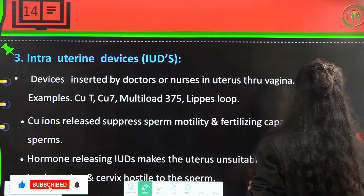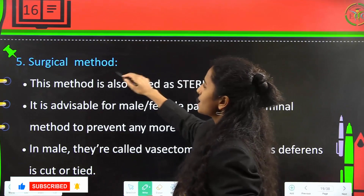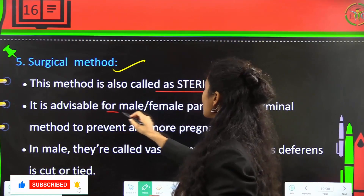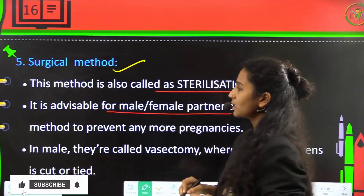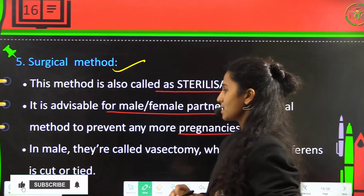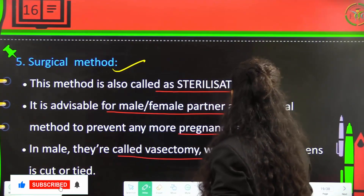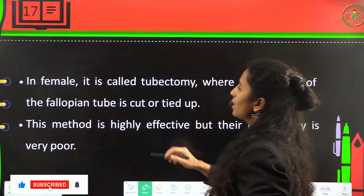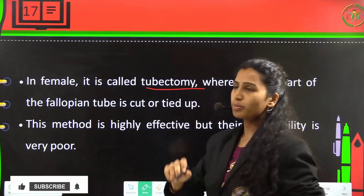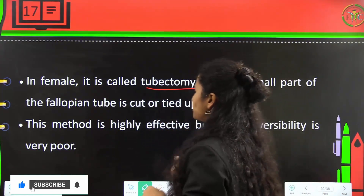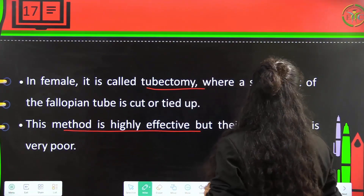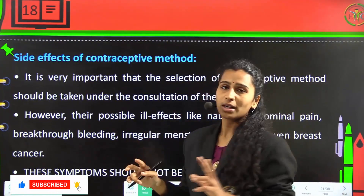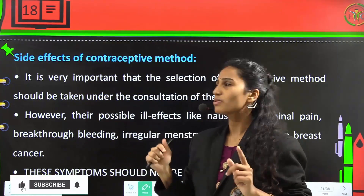Surgical methods, also called sterilization methods, are advisable for male or female partners as a terminal method to prevent further pregnancies. In males it is called vasectomy, where the vas deferens is cut and tied. In females it is called tubectomy, where a small part of the fallopian tube is cut or tied. This method is highly effective, but reversibility of both vasectomy and tubectomy is very poor.